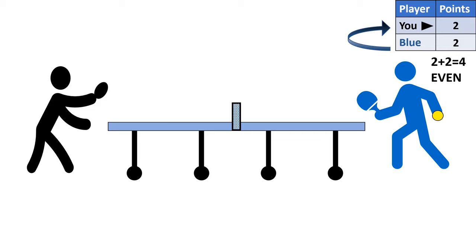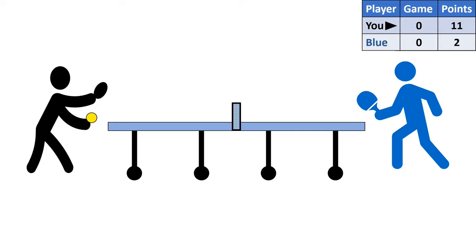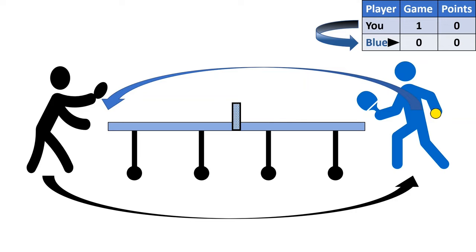You continue serving and rallying until someone gets 11 points — that wins the game. Points reset to zero and the next game starts. For the next game, the serve changes to the opponent who didn't start serving, and both players also switch sides of the table. You win the whole match by winning three games.